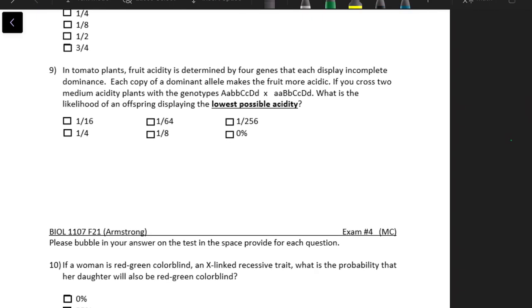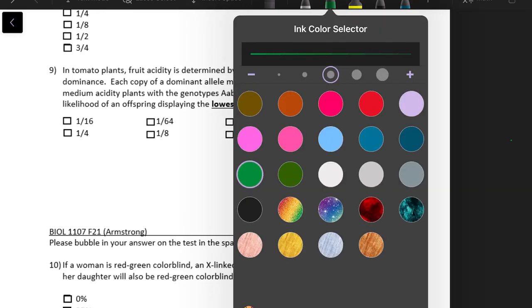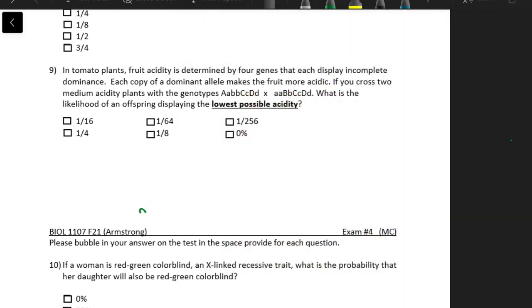All right, number nine. In tomato plants, fruit acidity is determined by four genes that each display incomplete dominance. Each copy of a dominant allele makes the fruit more acidic. If you cross two medium acidity plants with the genotypes big A, little a, little a, little b, little b, big C, little c, big D, little d, and little a, little a, big B, little b, big C, little c, big D, little d, what is the likelihood of an offspring displaying the lowest possible acidity? So let's write out the genotype for a plant with the lowest possible acidity. That would be all lowercase letters, right? Because a dominant allele makes the fruit more acidic.